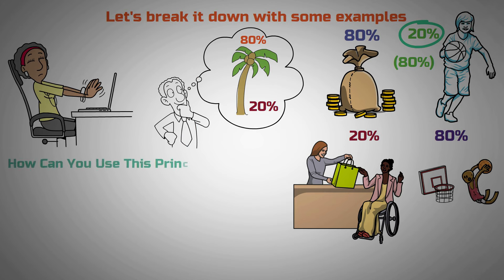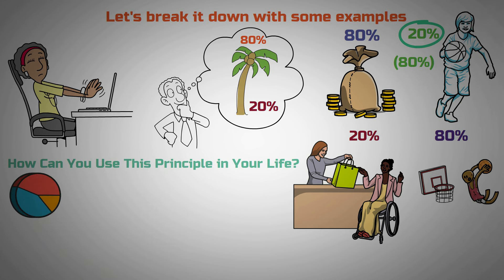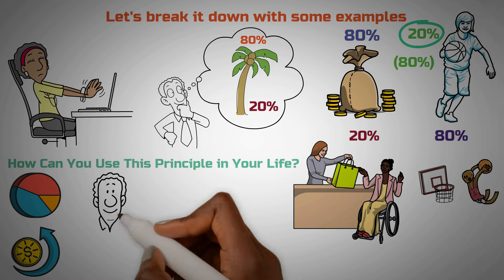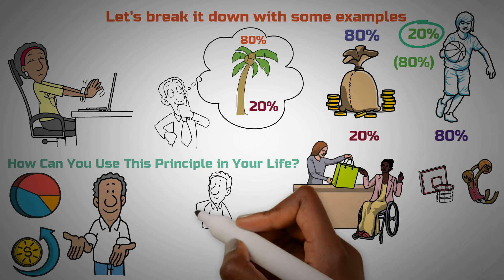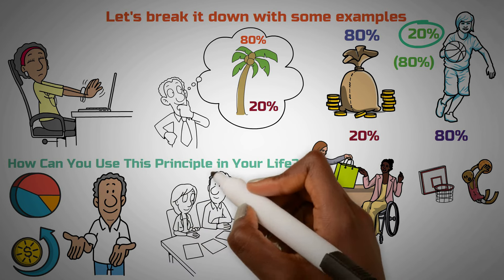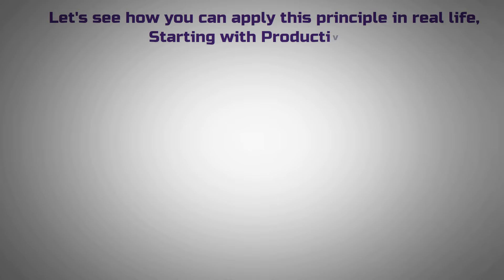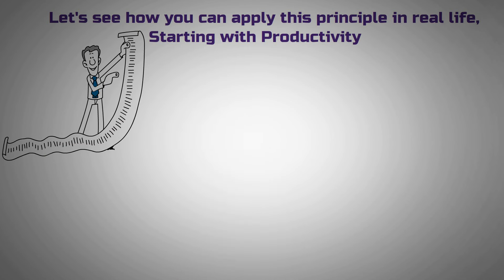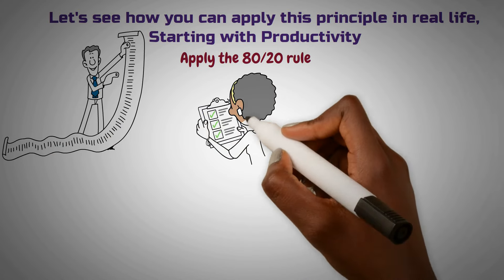How can you use this principle in your life? The Pareto Principle is widely applicable across various industries, but it's especially popular in business and economics — because it's a powerful tool for pinpointing where to direct your efforts to get the most out of them. It's incredibly handy when dealing with tasks that can be broken down into smaller pieces, allowing you to figure out which parts of your work pack the most punch. Starting with productivity: suppose you've got a list of tasks to tackle for the day. Instead of diving in randomly, apply the 80-20 rule — look for the tasks where completing just 20% of them will give you 80% of the impact.